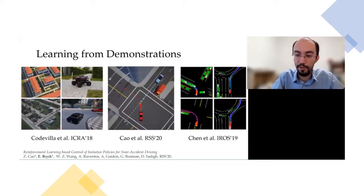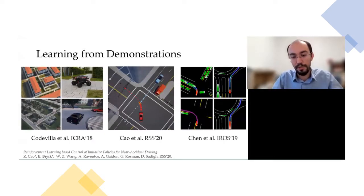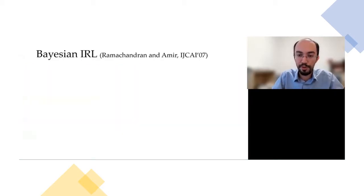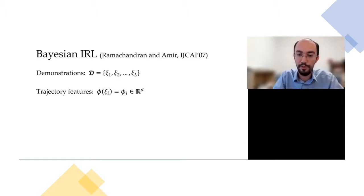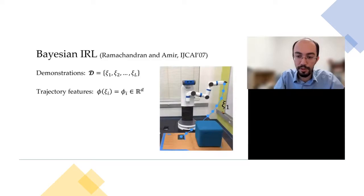So what is wrong with these methods? Why can't we just imitate the human and have a perfect driving policy? One of the reasons is that human demonstrations are often suboptimal. To more concretely see why learning from demonstrations may fail, let's look at Bayesian IRL. In the setup, we are given a set of demonstrations — basically robot trajectories — and there is a function phi that maps each trajectory to a set of features.